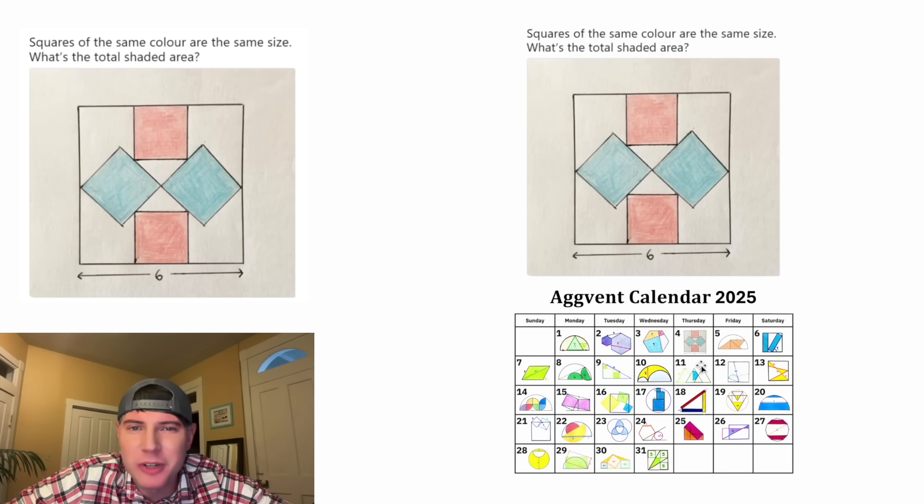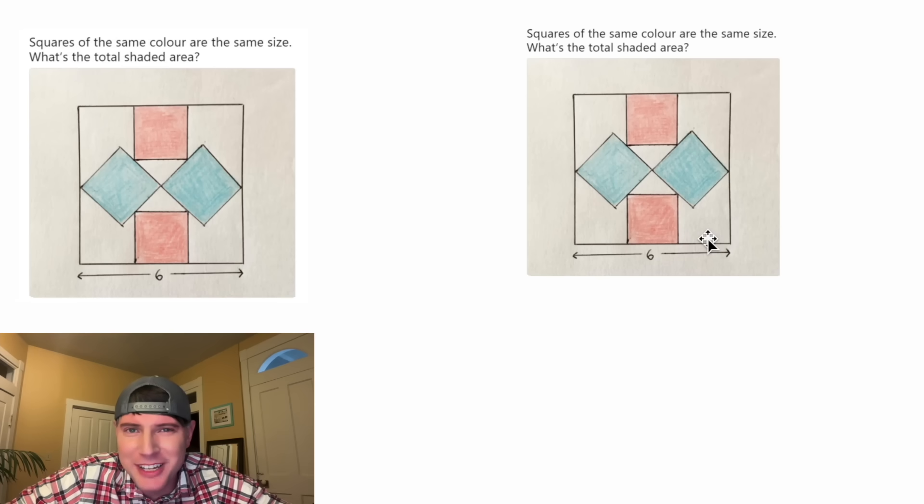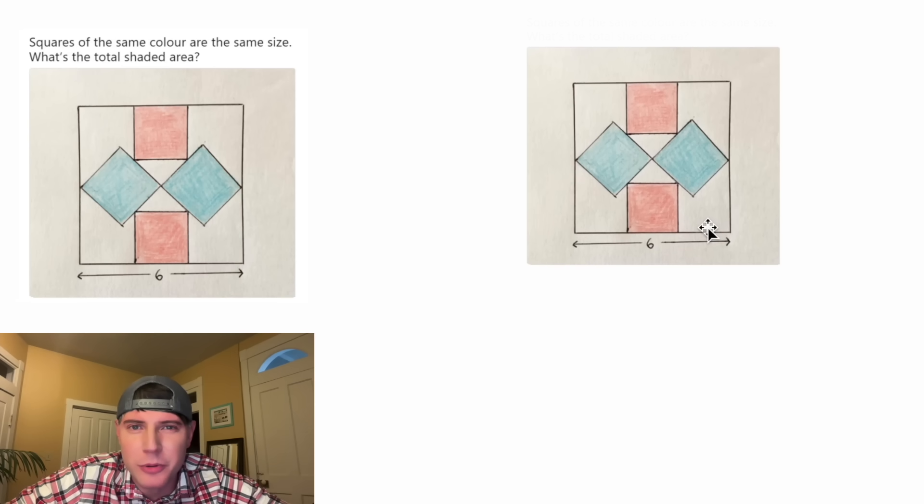This is day four of our 2025 AgVent calendar. For the month of December, we're going to solve 31 Katrina Ag puzzles. And if you want to try this one, pause it right now because I'm going to solve it in three, two, one.